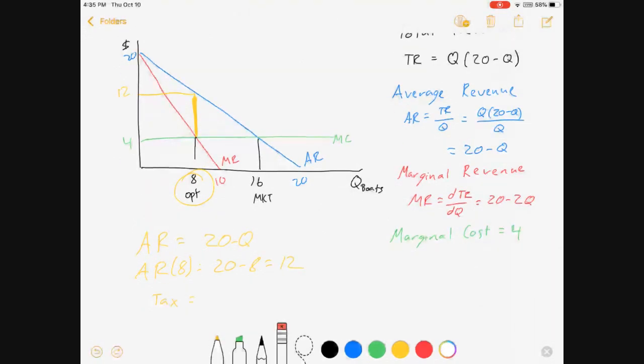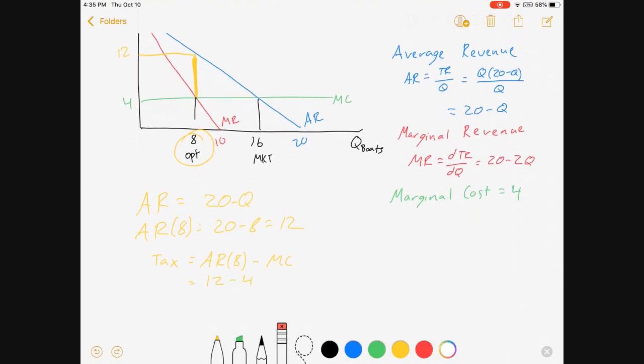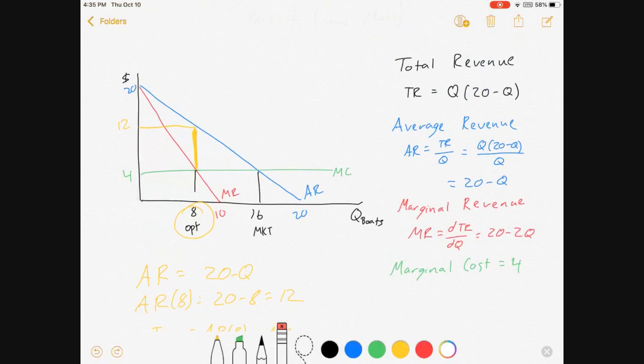And so how do I set my tax? Well, my tax is equal to the average revenue at that point minus the marginal cost, which is 12 minus 4, which comes up to 8.